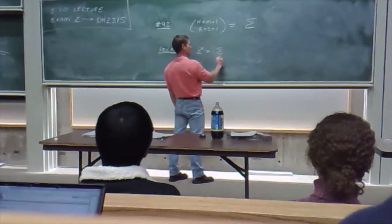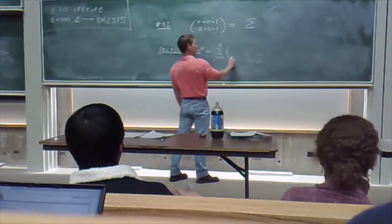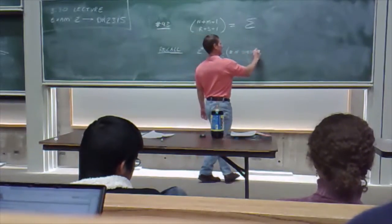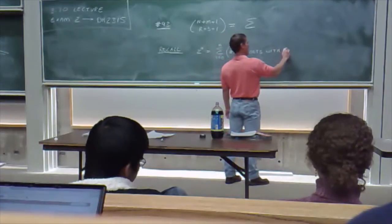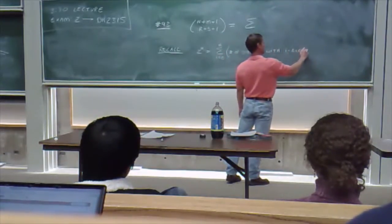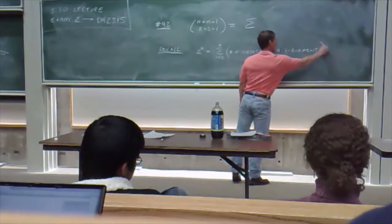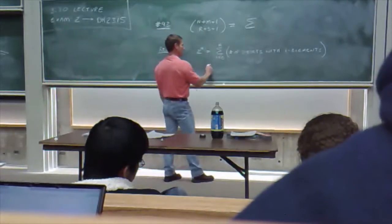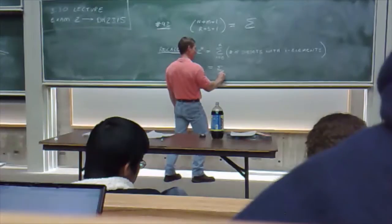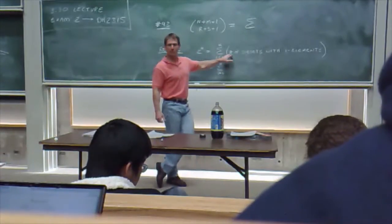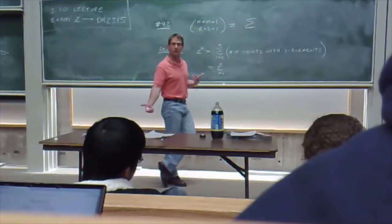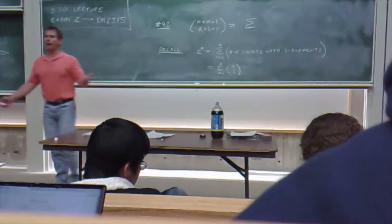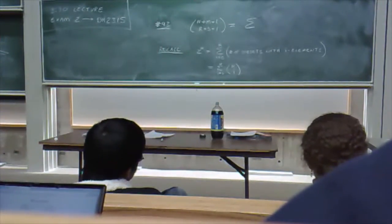So this is equal to the summation i equals 0 to n of the number of subsets with precisely i elements. Because every subset will have some number of elements between 0 and n. But one of the points of chapter 5 was that we know a formula for the number of subsets of an n-element set which have i elements. And that is? n choose i. So that was one identity that we got by partitioning a set of sets.